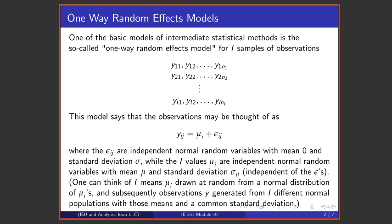One of the basic models of intermediate statistical methods is in fact this so-called one-way random effects model. It is a model for a number of samples of observations—here is sample number one, here is sample number two, here is sample number i.